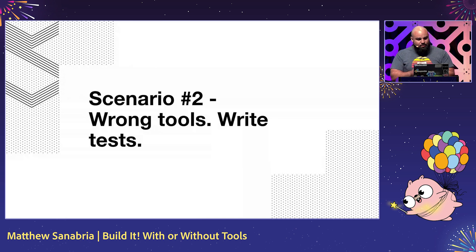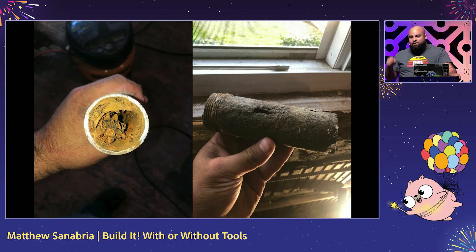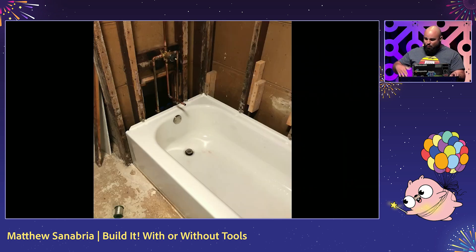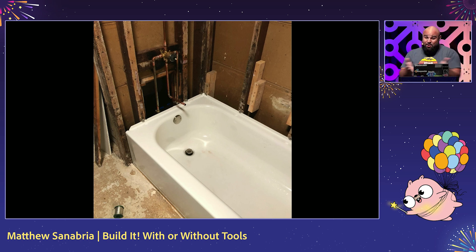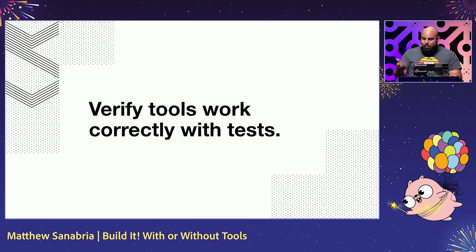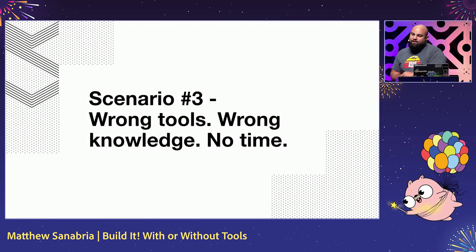Scenario two: wrong tools usually means bad implementation. Somebody used the wrong tools and put galvanized steel pipes as drains — galvanized steel rusts. I took them out and replaced them with PVC, then wrote a test case: I filled the bathtub with water and let it drain, and my new PVC pipes did not leak. But since the water was flowing so freely now, there was a backup further down the pipes that did leak and flooded my kitchen. This happens in your code all the time — you change one thing and break something else. You learn about the system and keep going. Go has great tools for troubleshooting: go test, pprof, delve for debugging. Use these tools to understand your system and write your own tests to find that behavior. The point: verify that your tools work with correct testing.